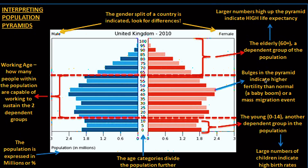Bulges in the middle indicate higher fertility than normal — a baby boom. A baby boom means people were giving birth to many children at a particular point in time, and those new births add to the youthful population, causing that visible increase in the middle-age cohorts.